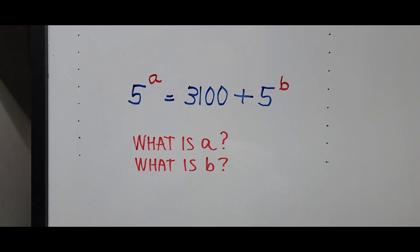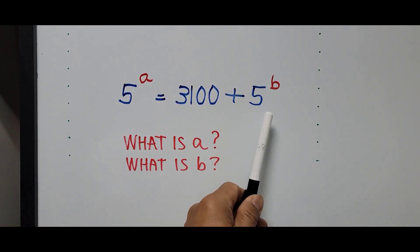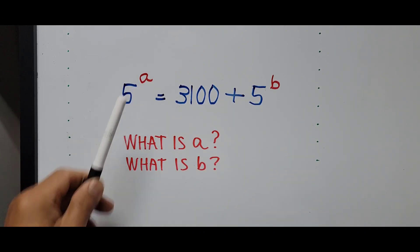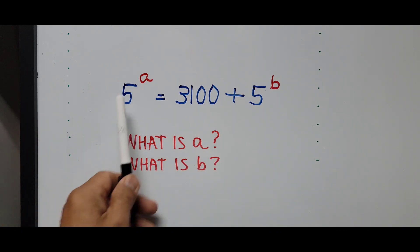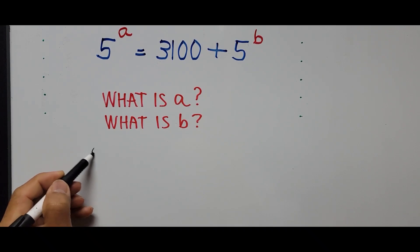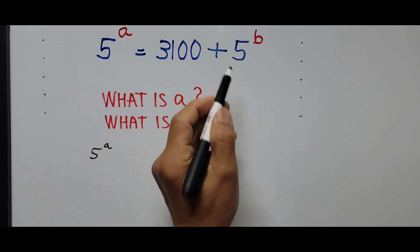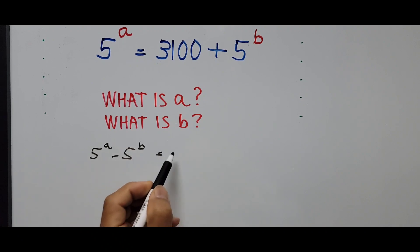Alright, let's go ahead and start solving. In this equation, we have a variable on the left as exponent A and another variable on the right as exponent B. What we're going to do first is arrange those variables — put all the variables to the left and just the constant to the right. So we rewrite the equation: 5 raised to A minus 5 raised to B equals 3100.